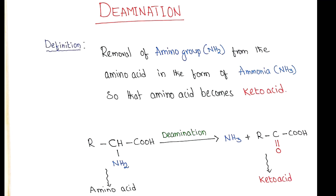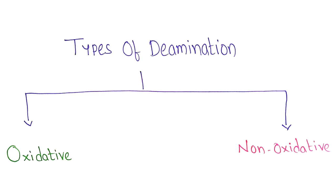Hello everyone, this video is about deamination, its types and its significance. Deamination is the removal of amino group from the amino acid in the form of ammonia. When this happens, amino acid is converted into a ketoacid.